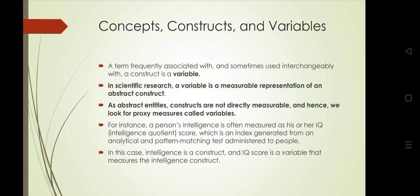Examples of variables include height in inches, scores on a depression inventory, and ages of employees. Abstract entities such as constructs are not directly measurable, so we look for proxy measures called variables. For example, a person's intelligence is often measured as their IQ score, generated from analytical and pattern-matching tests. Intelligence is the construct, whereas the IQ score is the variable that measures it.